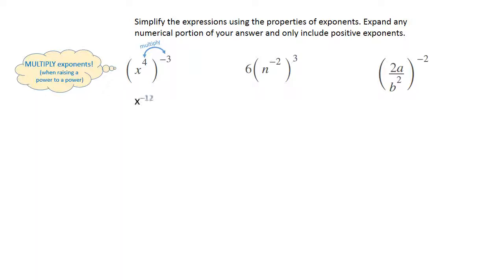That's going to become x to the negative 12, and because that's negative, it's going to have to move to a denominator in order to be positive. You're going to put a 1 in the numerator to fill the space, and the x to the 12th will be in the denominator, and that's the simplified answer for the first one.